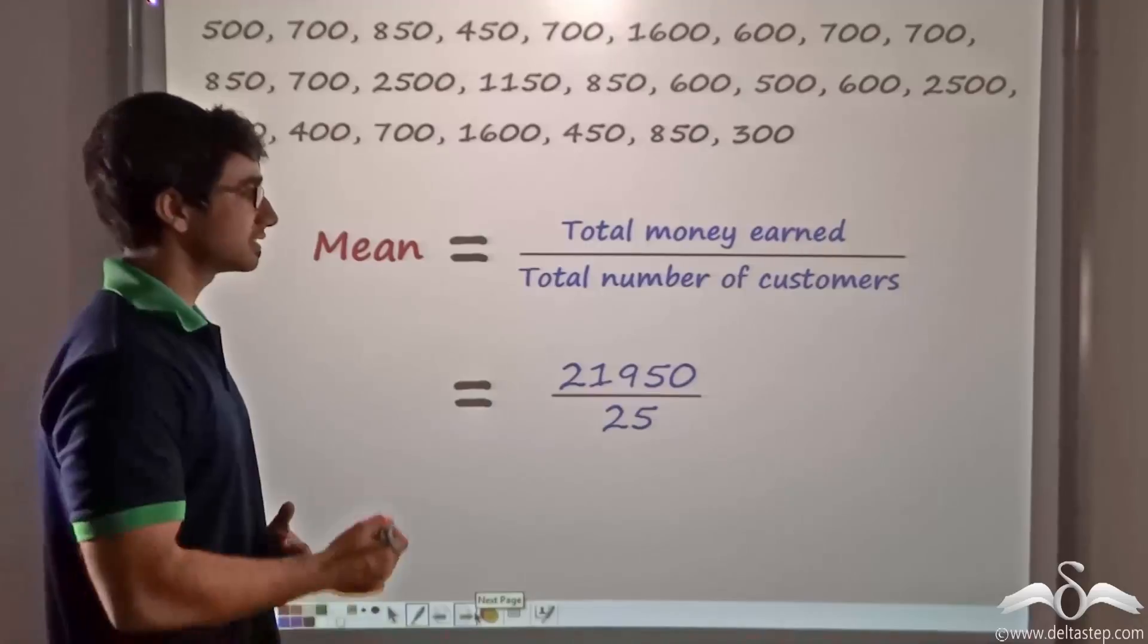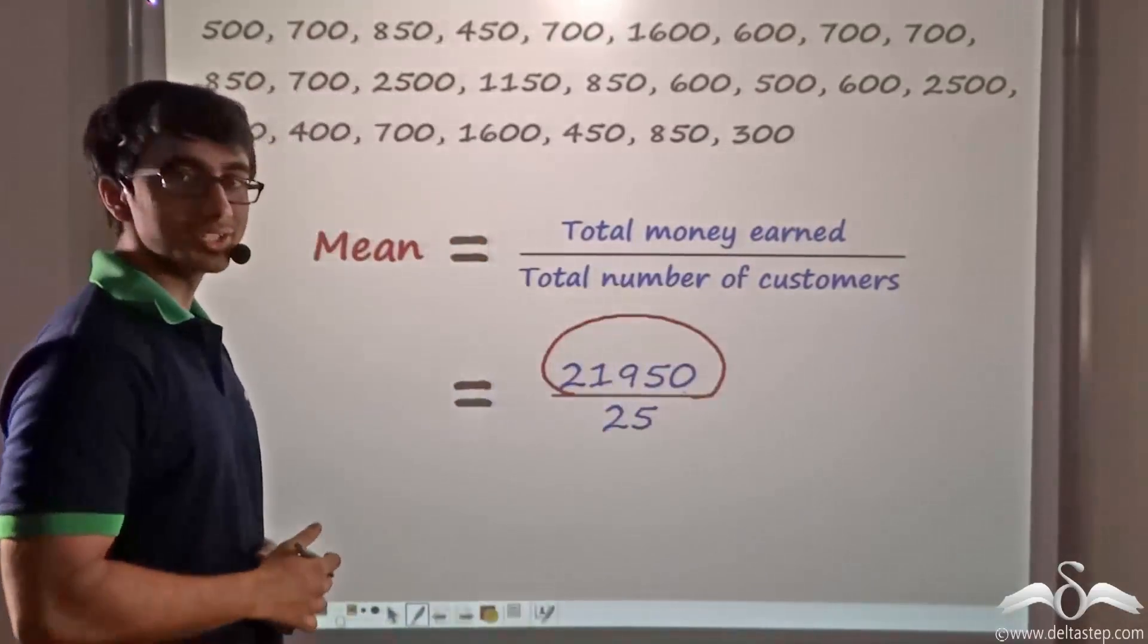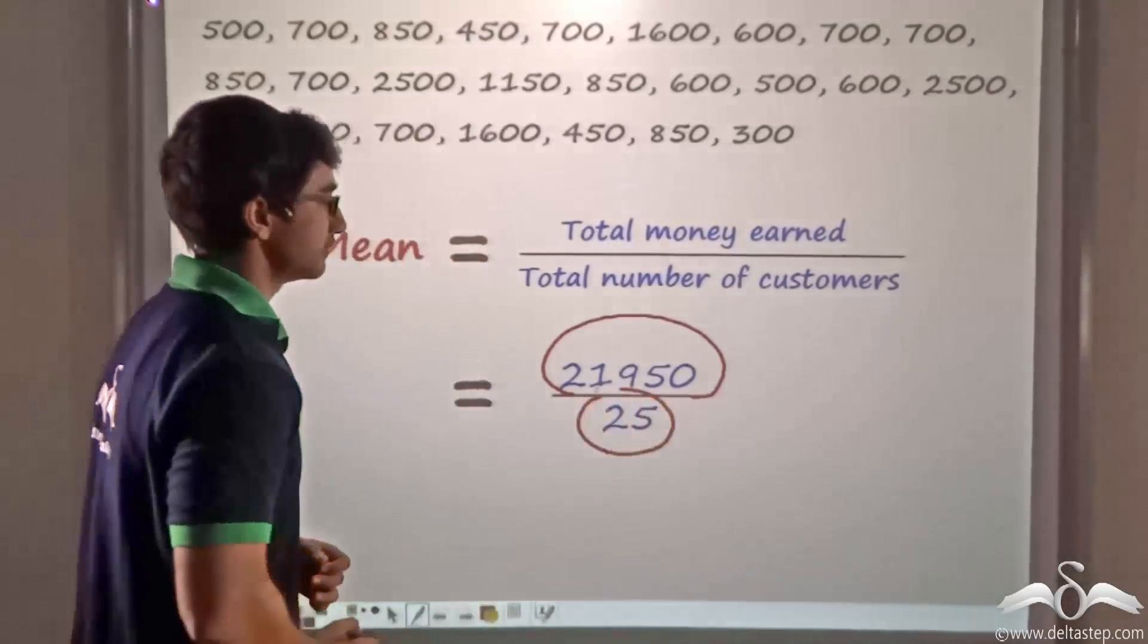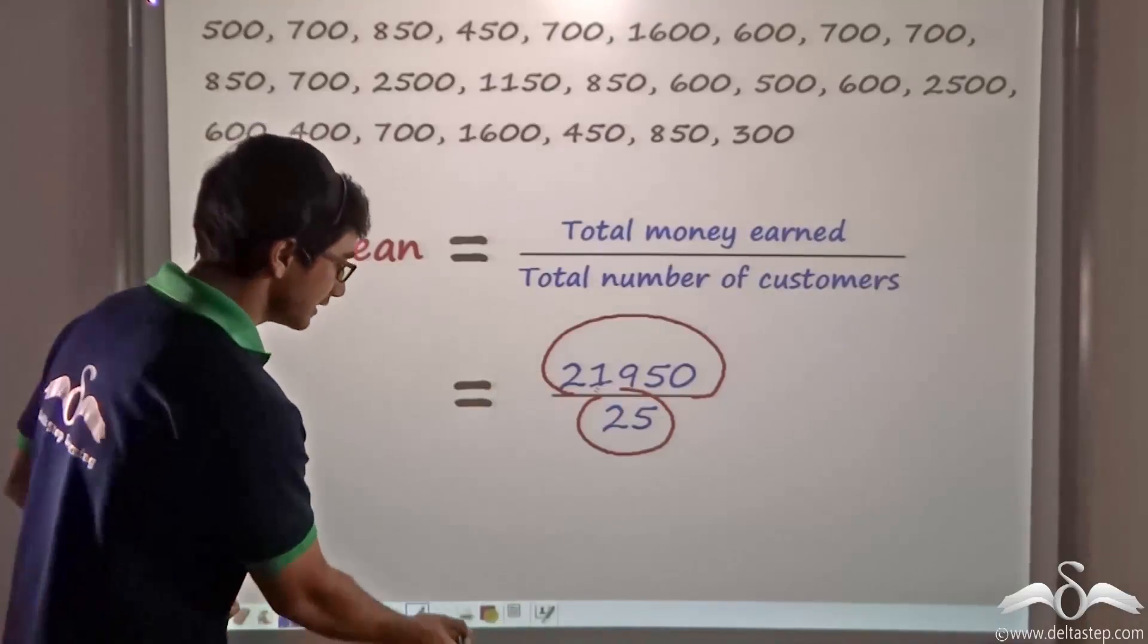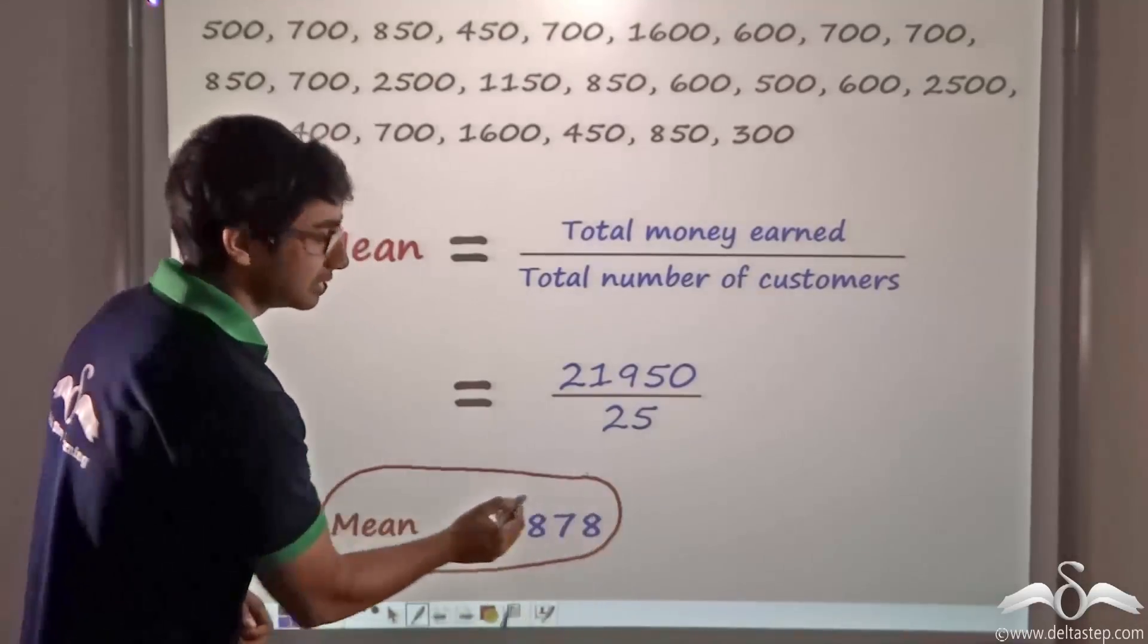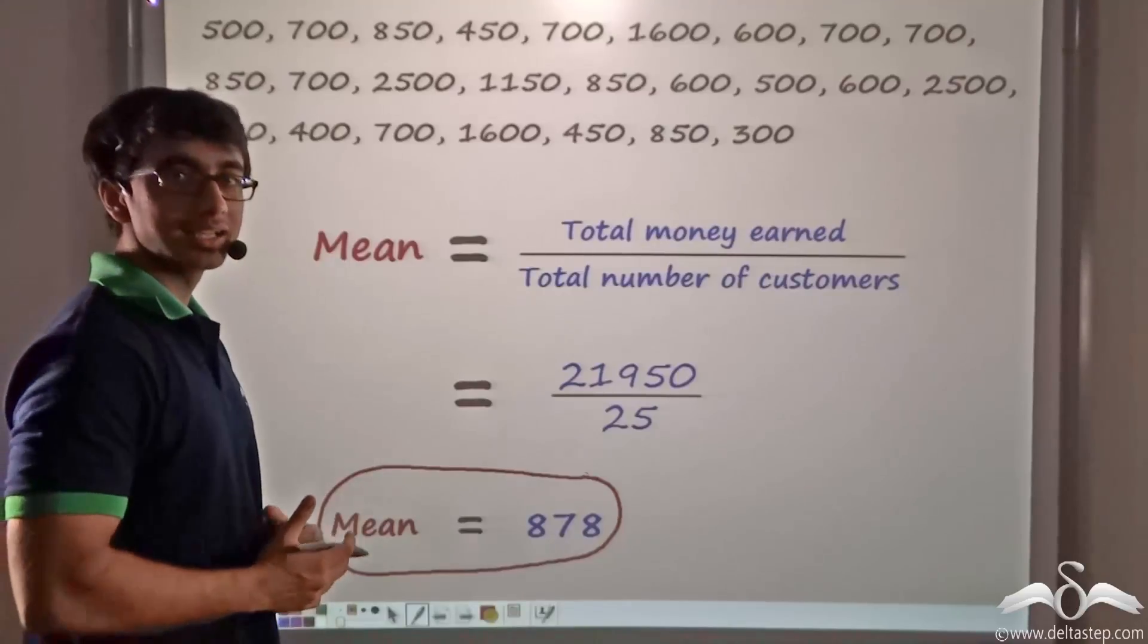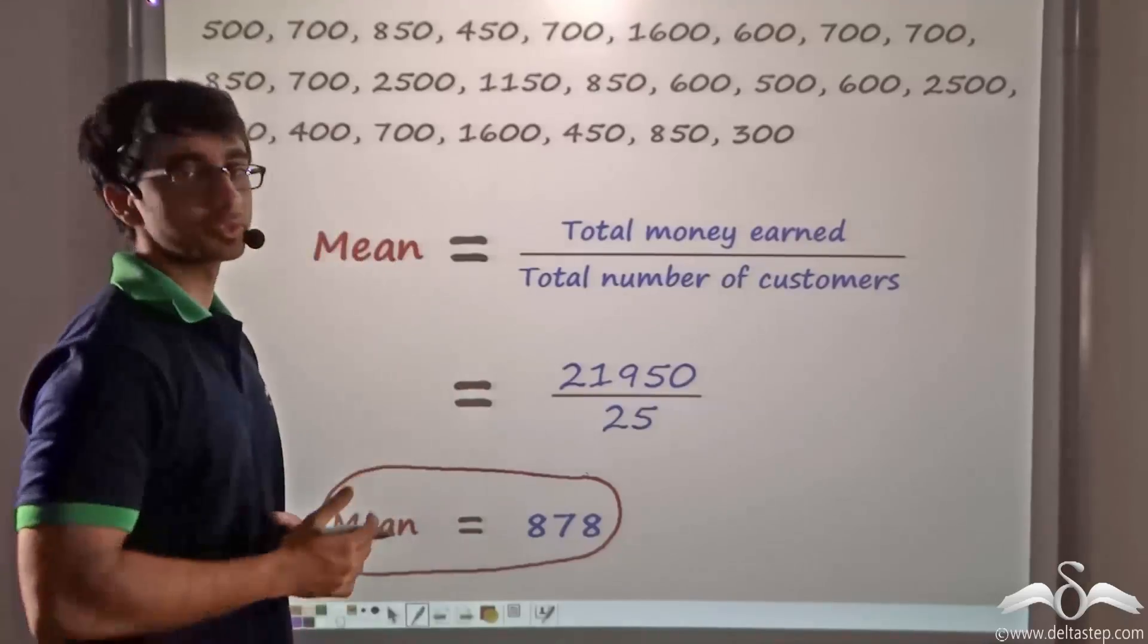So thus, he finds that the total money he earned is 21,950. And as we counted, the total number of customers who had visited his shop is 25. So he simply divides 21,950 by 25. And this gives him a value of 878. This value 878 is known as the mean of the given data. This mean is nothing but the average of how much each customer paid in order to buy the dresses from him.